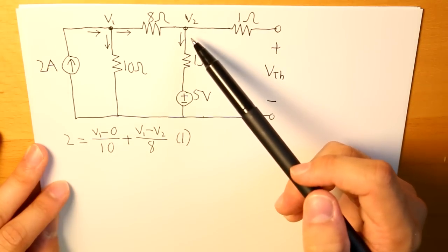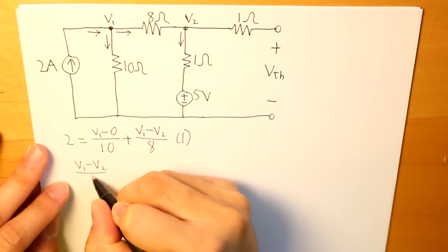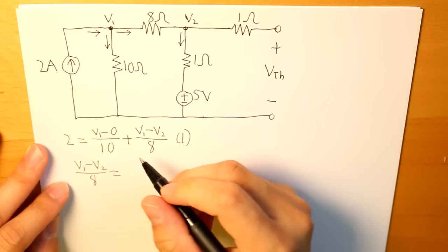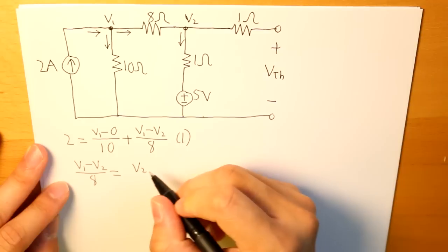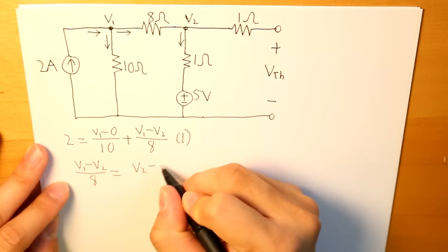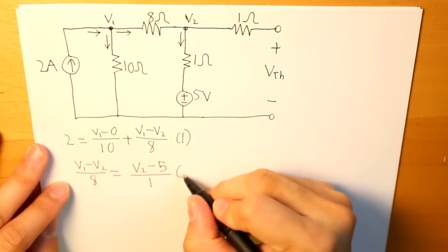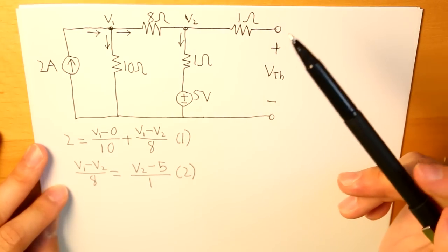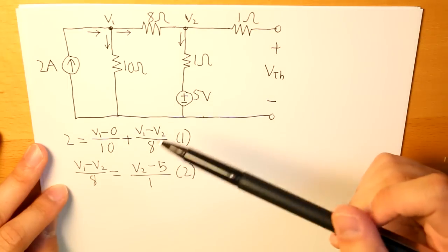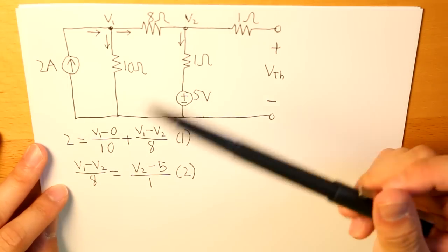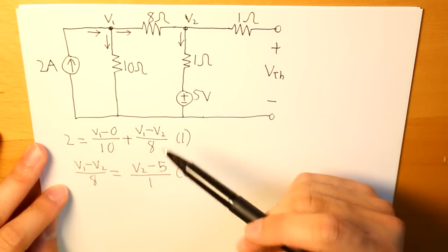And then for V2, it's going to be V1 minus V2 divided by 8 is equal to V2 minus 5 divided by 1. And that's our equation 2. Now what we want to do is find what V2 is going to be. And since we have two equations with two variables, that can be solved.